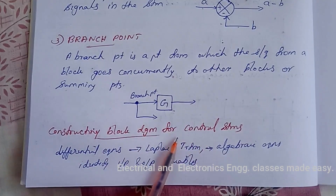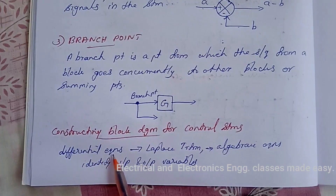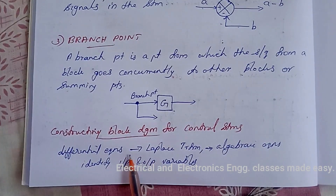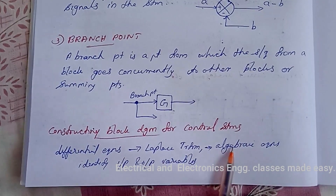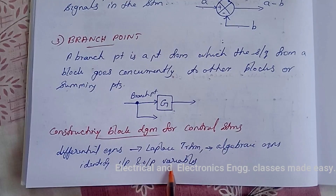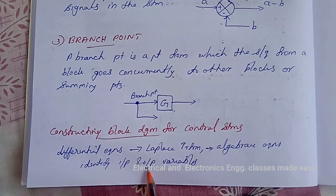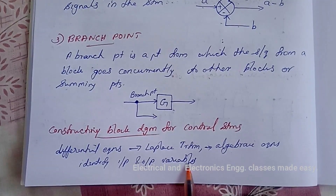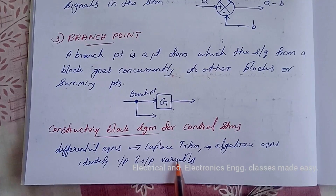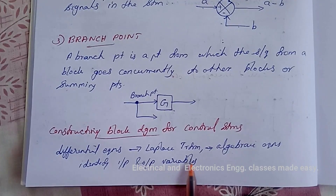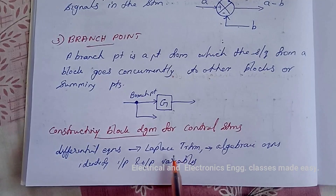Next is constructing block diagrams for control systems. A control system can be represented diagrammatically by a block diagram. The differential equations governing the system are used to construct the block diagram. By taking the Laplace transform, the differential equations are converted to algebraic equations. The equations will have input and output variables and constants. From knowledge of the system, input and output variables are identified, and the block diagram for each equation is drawn. Each equation gives one section of the block diagram, and the output of one section will be the input for another. The various sections are then interconnected to obtain the overall block diagram.